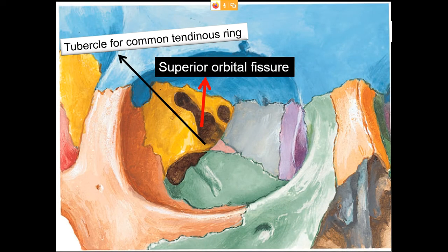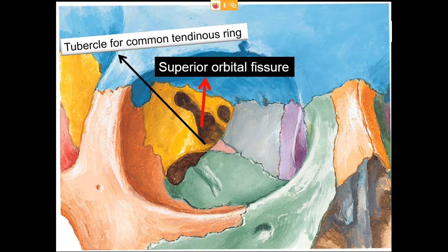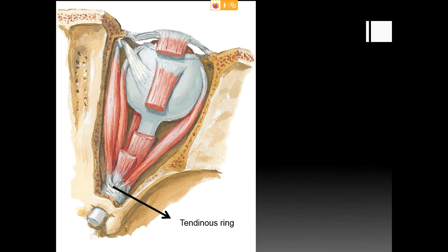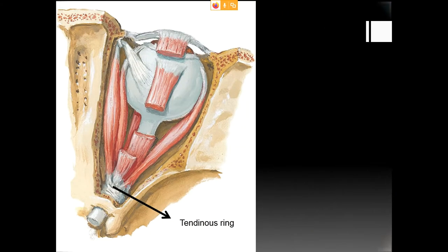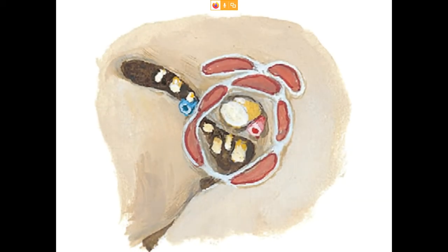At the posterior part of the lateral wall we can identify the superior orbital fissure, contributed by the sphenoid bone, through which four muscles as well as nerves and vessels pass. On the greater wing of the sphenoid bone there is a tubercle giving attachment to the common tendinous ring of Zinn, which gives origin to the four recti muscles — superior rectus, inferior rectus, lateral rectus, and medial rectus.